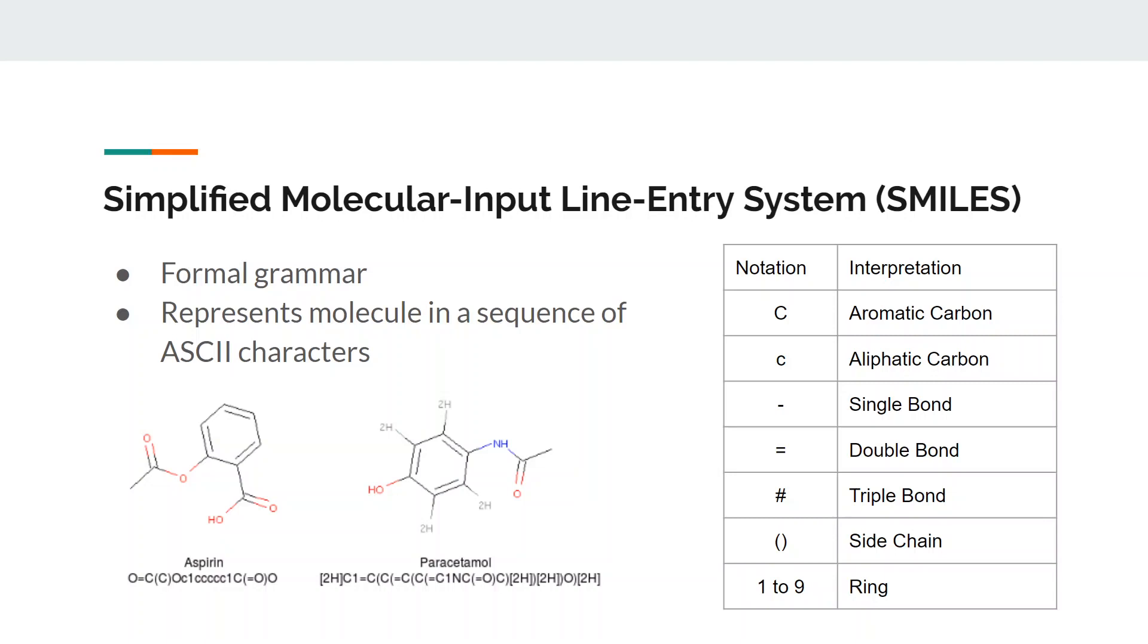Simplified Molecular Input Line Entry System i.e. SMILES is a formal grammar which is used to represent a molecule in the form of a sequence of ASCII characters. For instance, characters like small c and capital C are used for representing aromatic and aliphatic carbon atoms. Similarly, a hyphen, an equal sign and a hash symbol is used for representing a single, double and triple bond respectively.